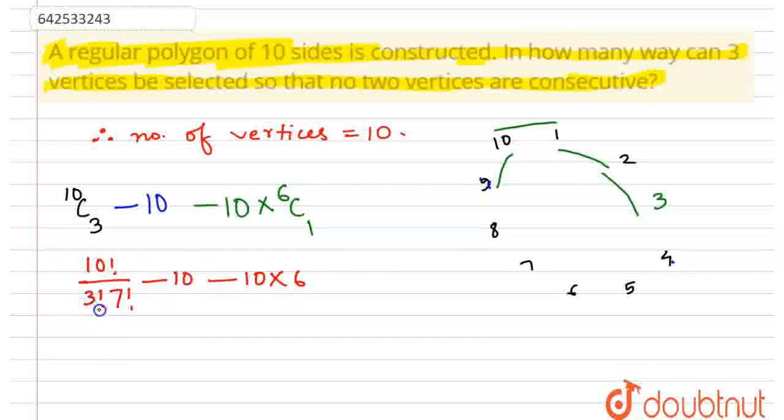Now this turns out to be 12 times 10 and this turns out to be 12 times 7. Not actually 12, it is 10. Sorry for that. So this finally turns out to be 10 times 12 minus 7. That is, 10 times 5. That is, 50.